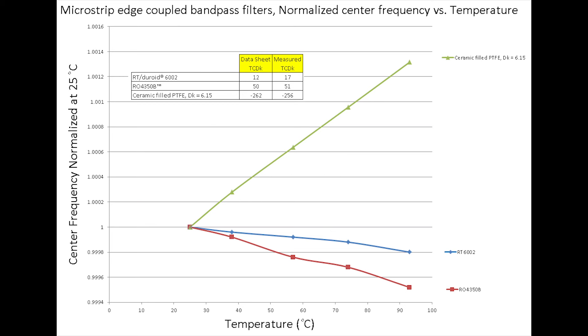The other laminate we're looking at here is a competitive material that is a ceramic-filled PTFE, and it's got a TCDK of about 240 to 250 — that's the green curve. You can see there's quite a dramatic response for the shift in the center frequency of the bandpass filter as you change temperatures, whereas the other materials show only a minor, not very significant shift.